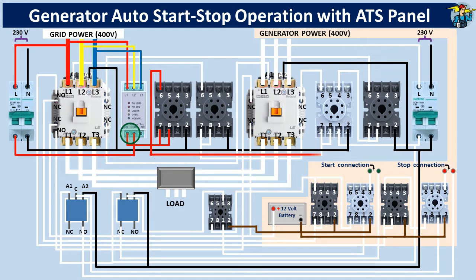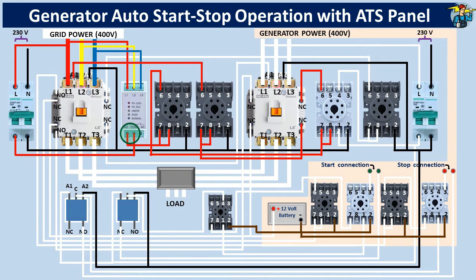The relay is energized after this delay period. Normally open points 8 and 6 will now be closed, allowing control power to timer number 2. This timer maintains a time lapse, preventing the load from getting power from the grid immediately after generator supply is removed. The 2 to 3 second blackout during the switch from generator to grid power is due to this safety time delay. The control supply to the operating coil A1 of the mains contactor now enables 3-phase supply to the load. This control power line to A1 passes through the normally closed auxiliary contact points of the generator contactor, allowing safety interlocking between the two magnetic contactors.